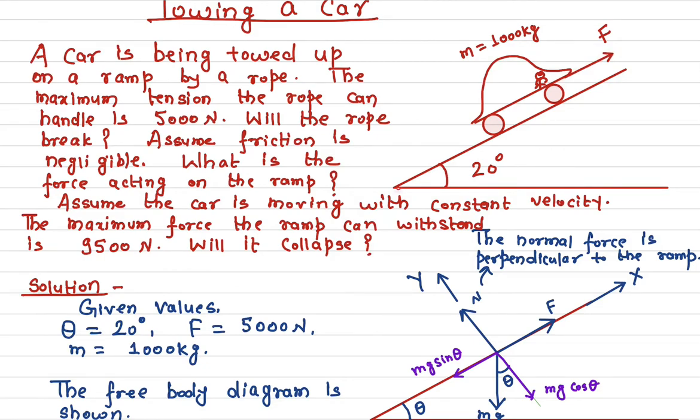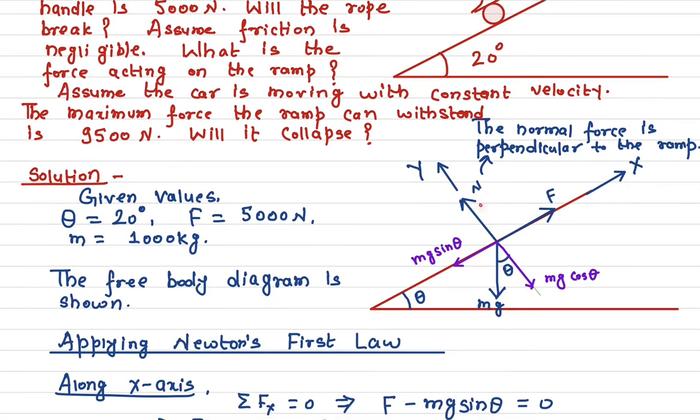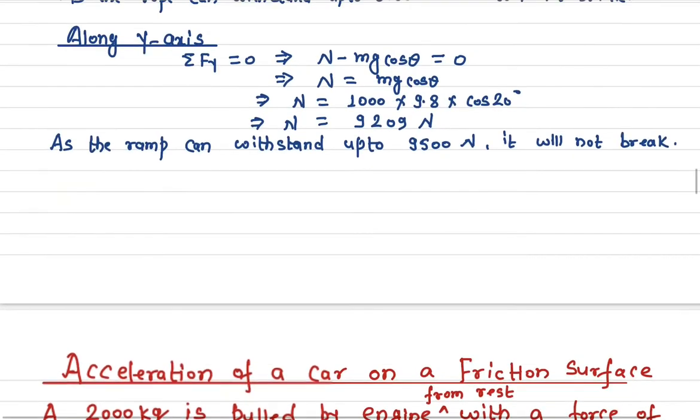Now see if this ramp will collapse. How are we going to find out what force is acting onto this ramp or this inclined plane? The total force that is acting onto the ramp is this force mg cosine theta or the normal force. These two forces are equal and opposite. So we need to find out what is the normal force here.